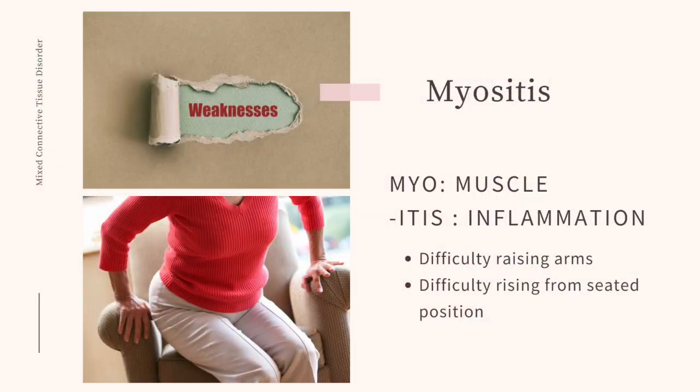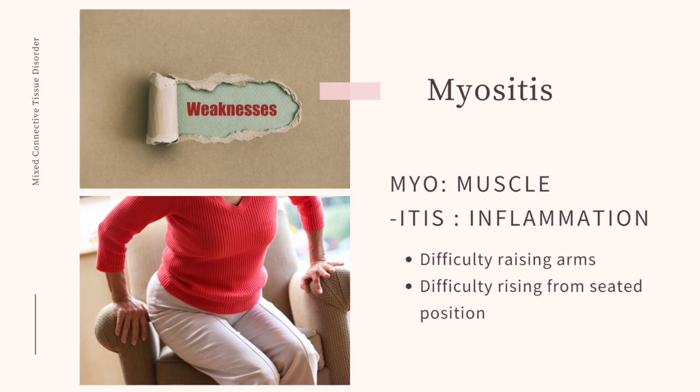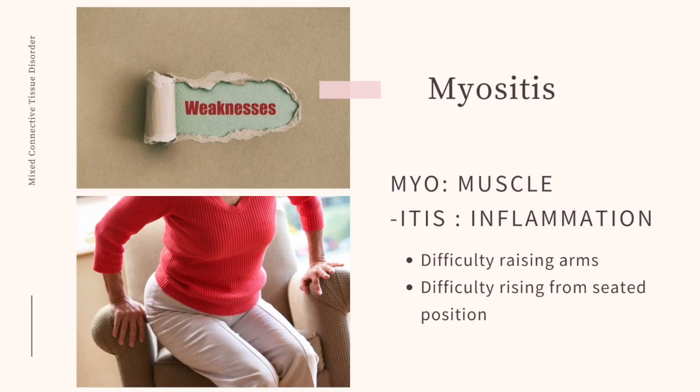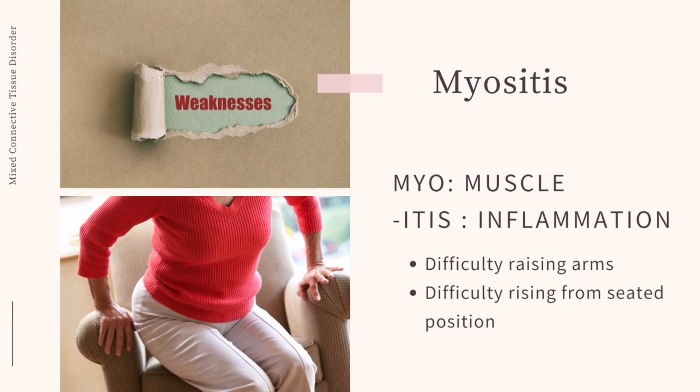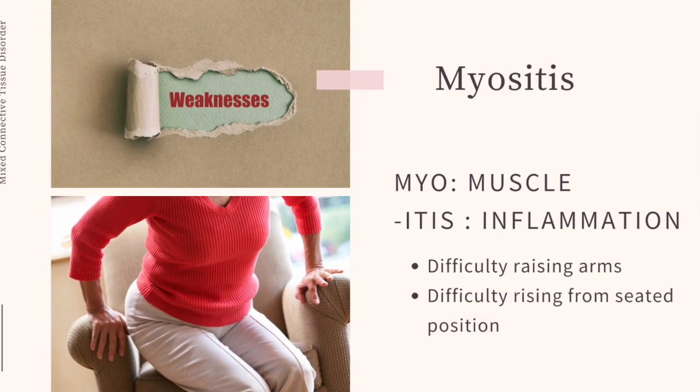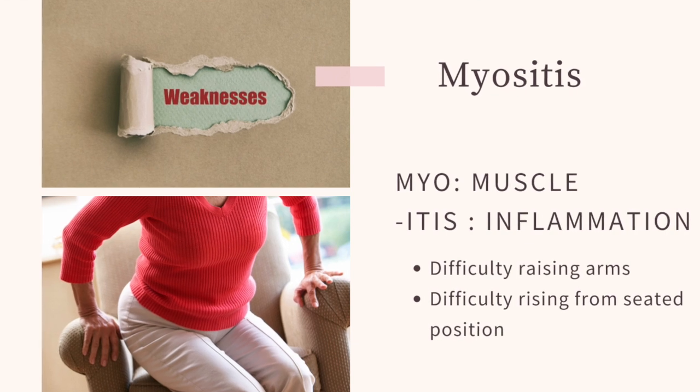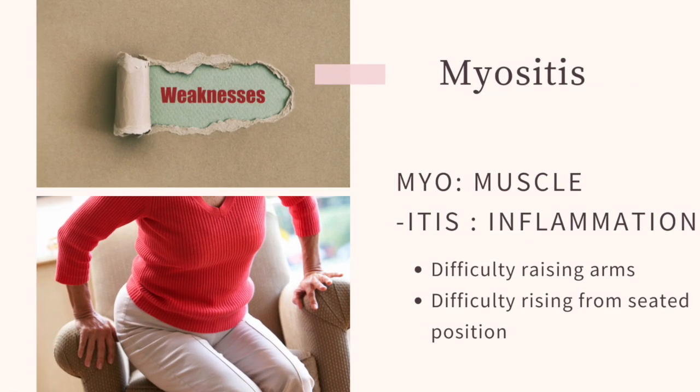You have a condition called polymyositis and dermatomyositis, where the main symptoms are muscle inflammation — and not muscle inflammation from head to toe, but muscle inflammation that happens in a very distinctive pattern. It's the muscles we call in medicine the proximal muscles — the muscles closest to the trunk. So it's going to be the muscles of the upper arm and the muscles of the upper leg. And it's not so much pain as much as weakness. In general, that's what myositis is.